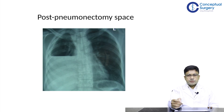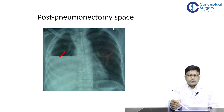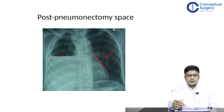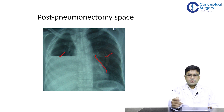This X-ray shows a hydropneumothorax on the right side, with the left lung markings visible and the mediastinum identifiable by the cardiac silhouette. This picture is typically seen in a post-pneumothorax space where fluid gradually fills up to obliterate the cavity — another situation where a chest tube is not required.